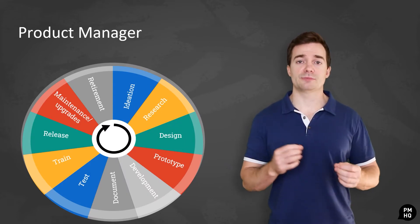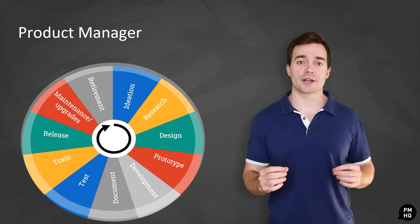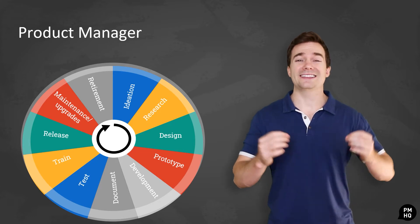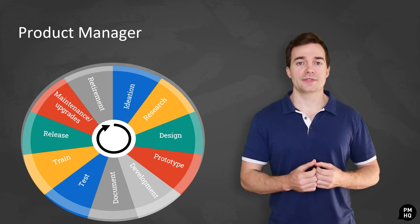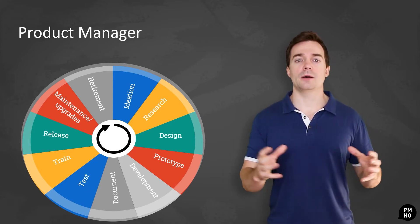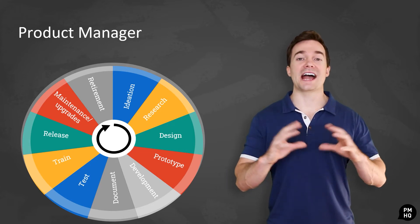Primarily, product managers are responsible for the overall success of the product. Product managers are a lot like product CEOs. They set goals, define success, help motivate teams, and are responsible for that outcome.